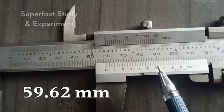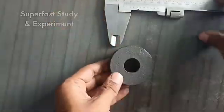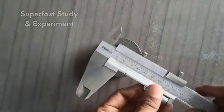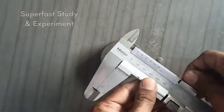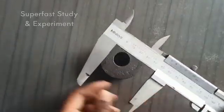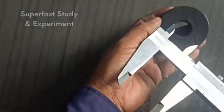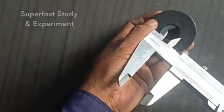Now we measure the ID of this object, the internal diameter, with the vernier. For that we will use the upper part, which I told you about earlier. This is the internal jaw. We will do the measurement with the internal jaw. We will insert it in this way.